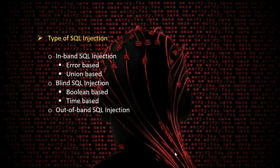There are three different types of SQL injection: in-band SQL injection, blind SQL injection, and out-of-band SQL injection. In-band includes error-based and union-based attacks. Blind SQL injection includes boolean-based and time-based attacks. We'll briefly cover what each of these types represents.